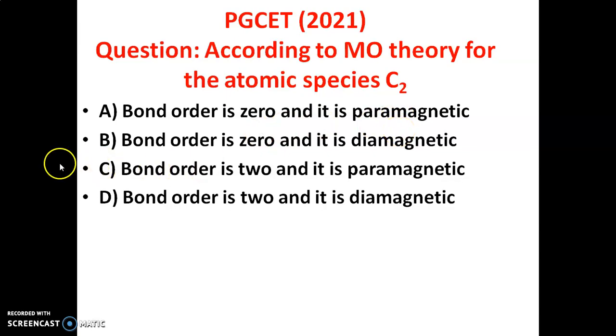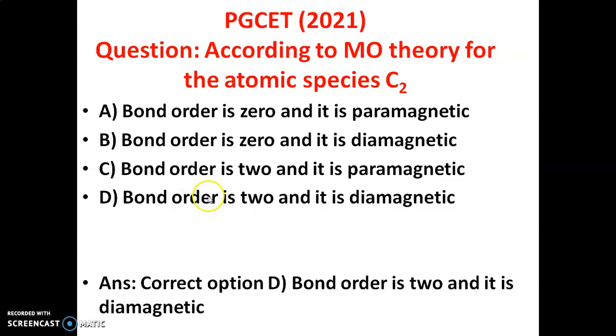The correct option is D — bond order is 2 and it is diamagnetic. First, let us discuss what paramagnetic and diamagnetic mean, and how to find bond order.